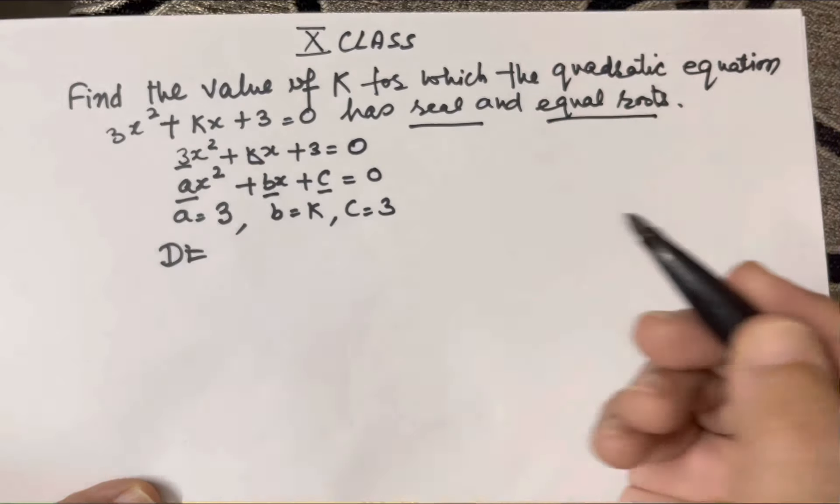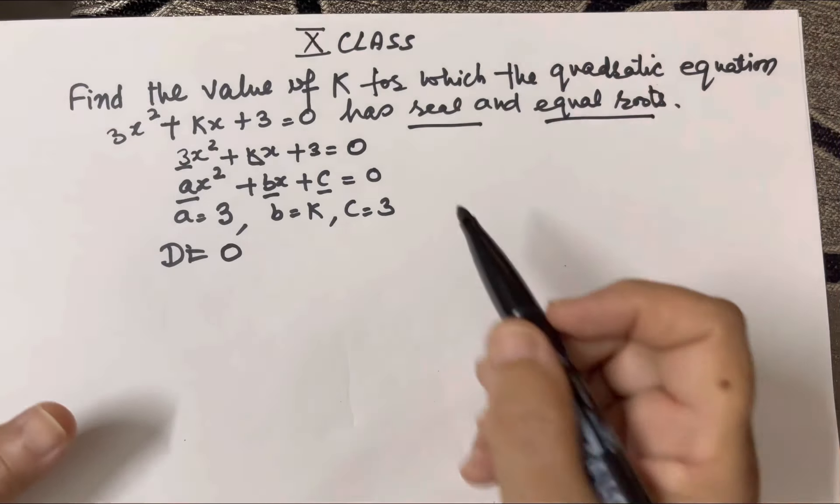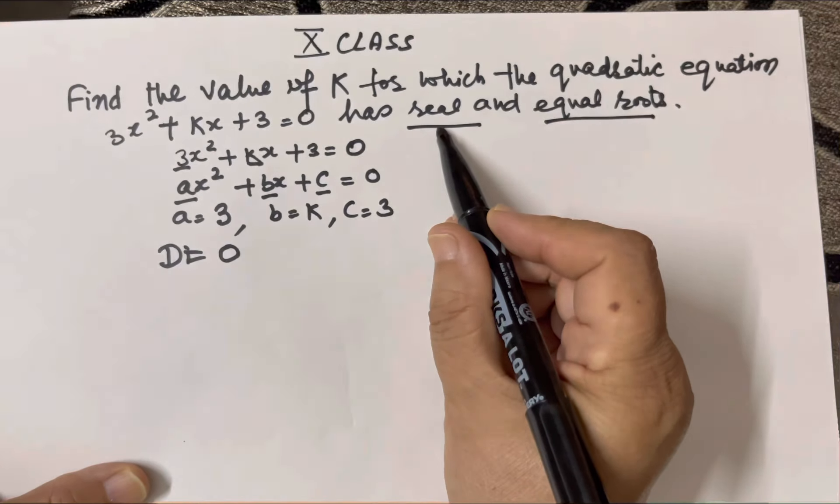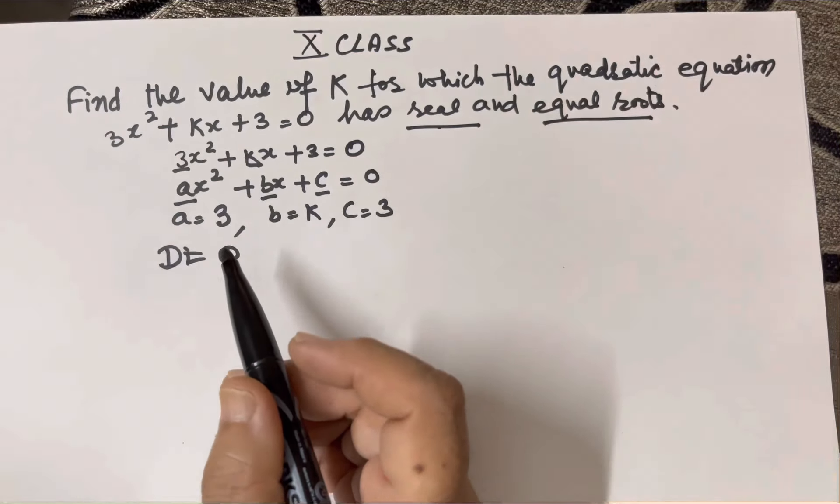This will be equal to 0. Why? Because the quadratic equation has real and equal roots, so the discriminant is equal to 0.